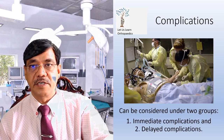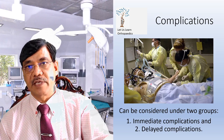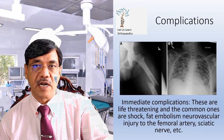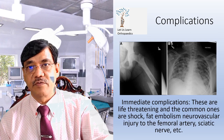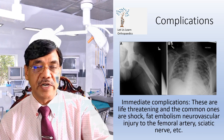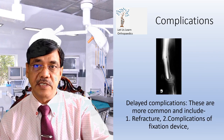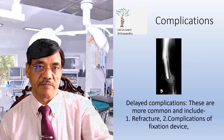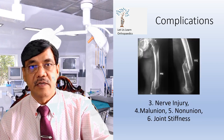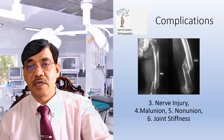Complications can be considered under two groups: immediate and delayed. Immediate complications are life-threatening; common ones are shock, fat embolism, and neurovascular injuries to the femoral artery and sciatic nerve. Delayed complications are more common and include refracture, complications of the fixation device, nerve injuries, malunion, nonunion, and joint stiffness.